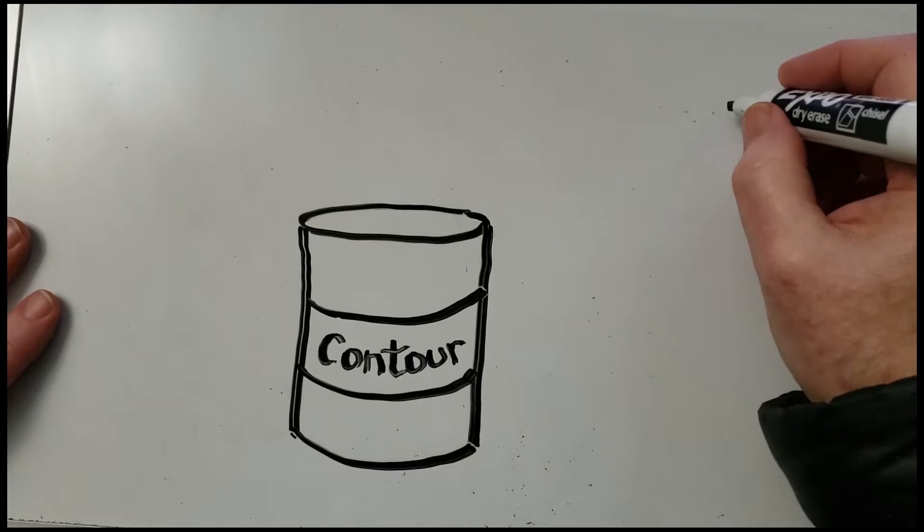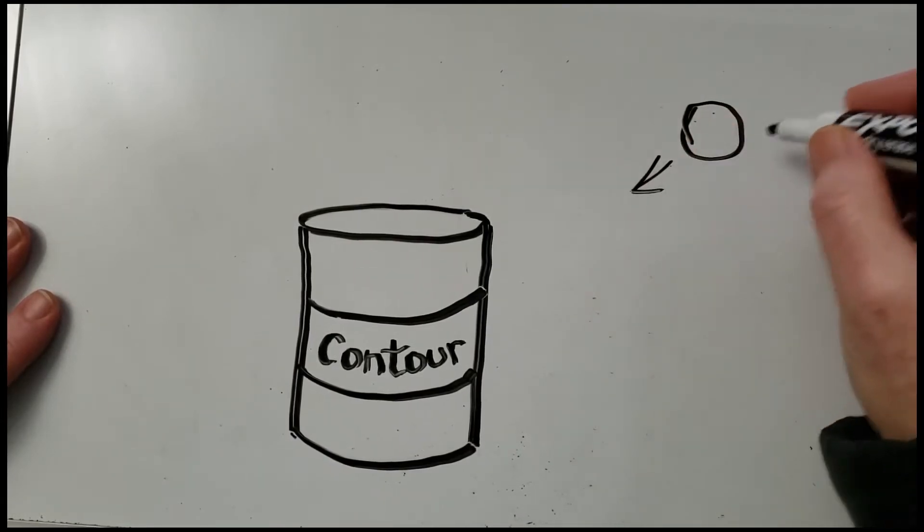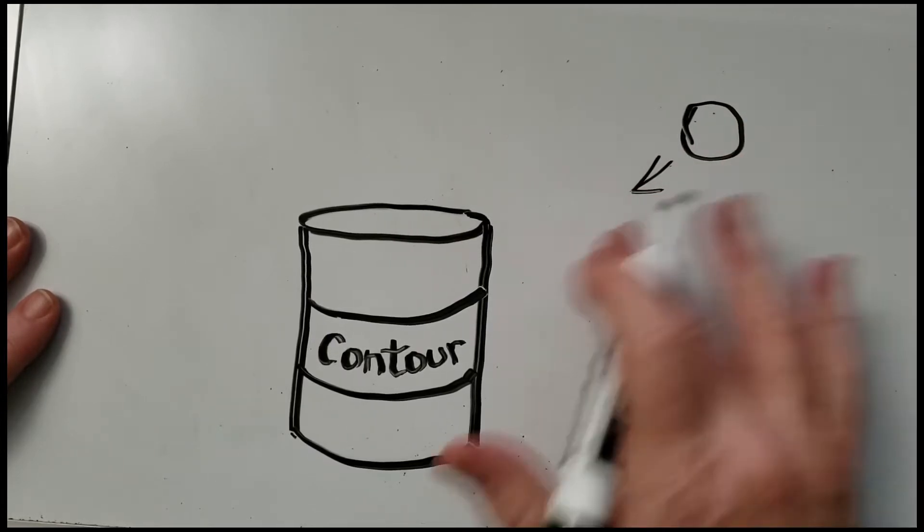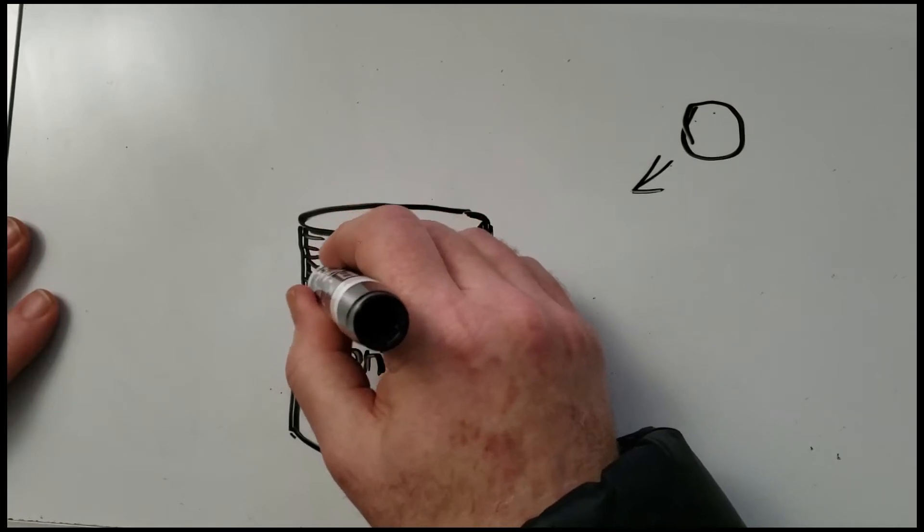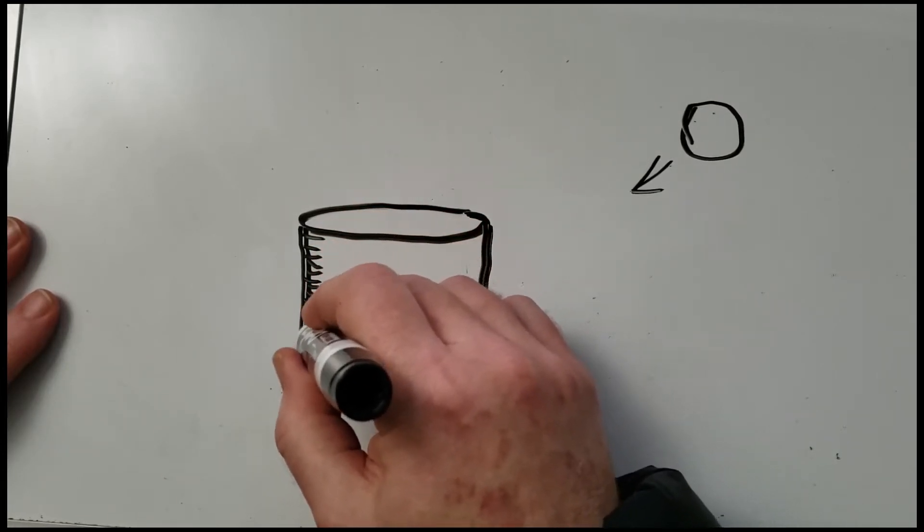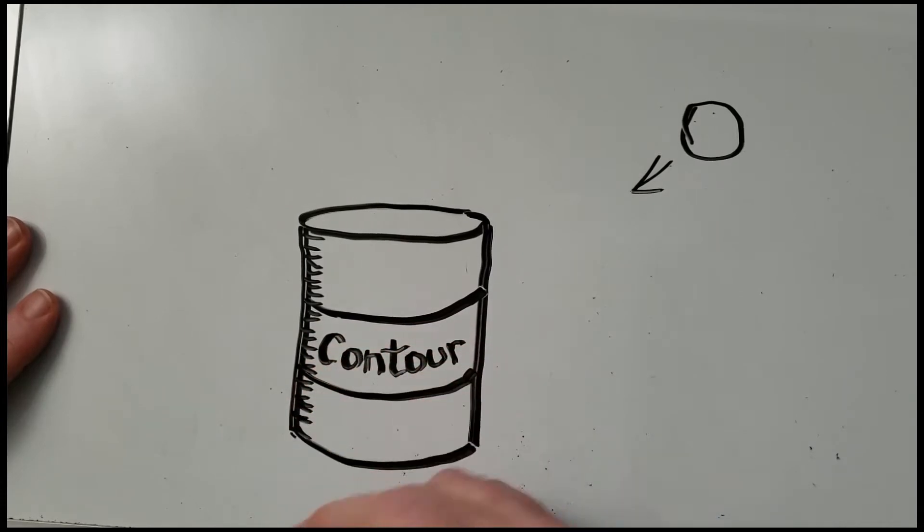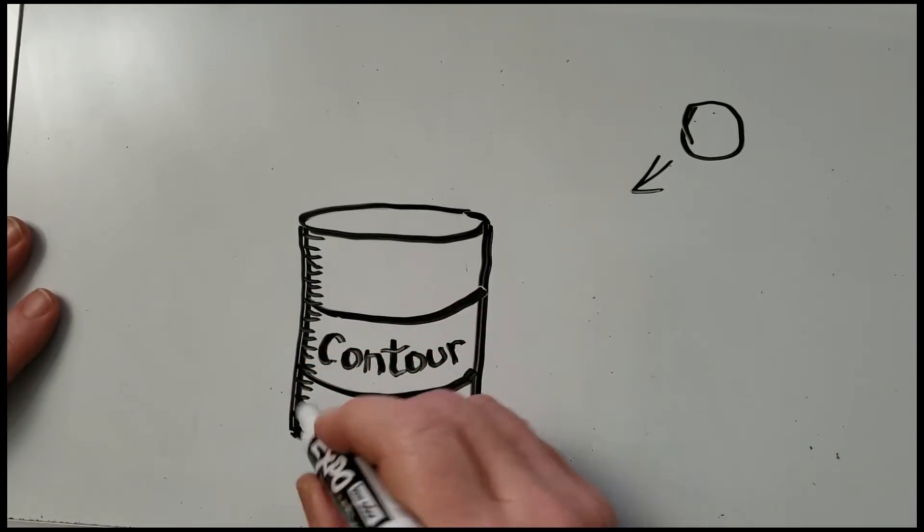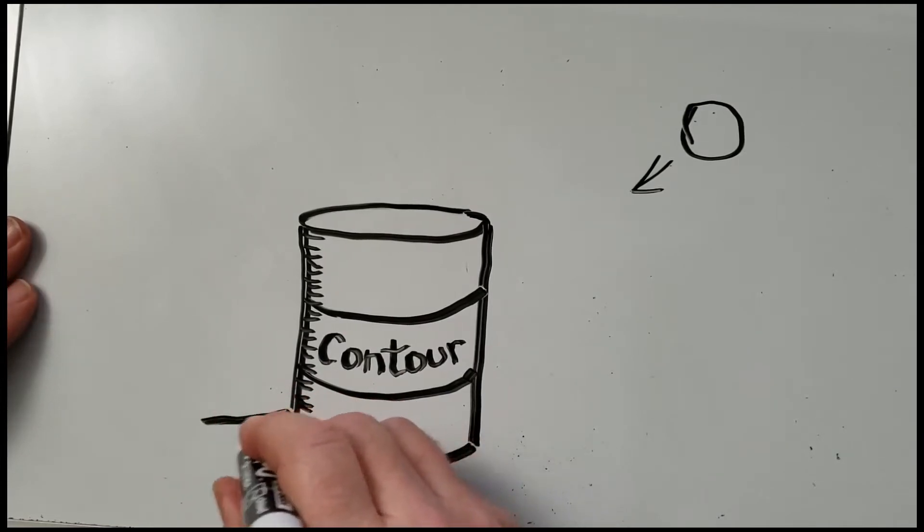We'll assume that the sun is over here, and it will beam down this way. So if the sun is over here, then this side is going to have some shade. I'm going to use hash marks, but if you're using a pencil, you can use the side of the pencil to put the shade. And it's going to cast a shadow on the ground.